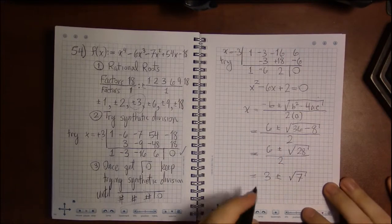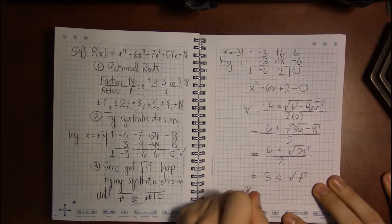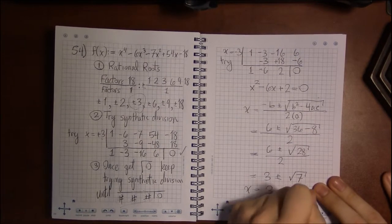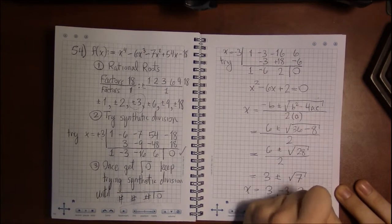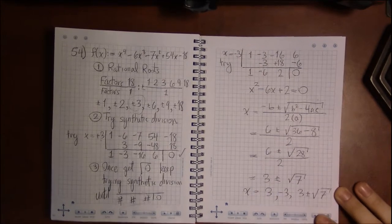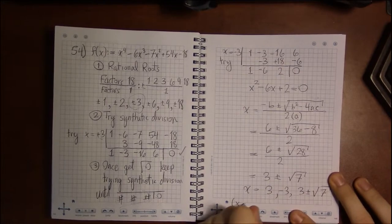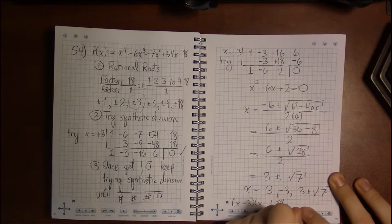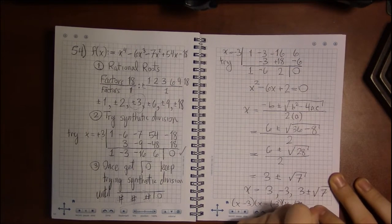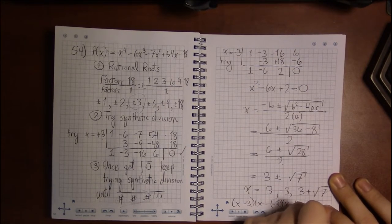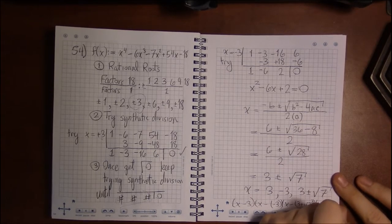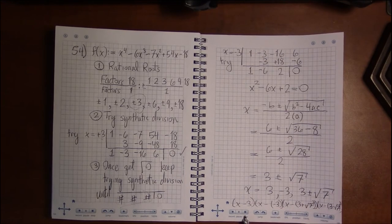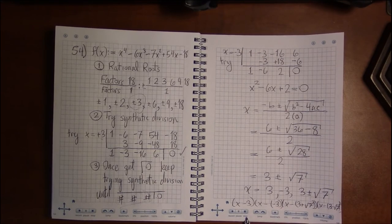You'll end up getting 3 plus or minus square root of 7. So your roots are plus 3, minus 3, and 3 plus or minus square root of 7. And the corresponding factors will be x minus 3, x minus a minus 3, x minus 3 plus square root 7, and then x minus the quantity 3 minus square root 7. But that's because I want to emphasize that point.